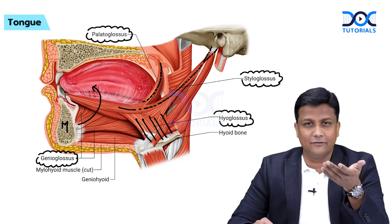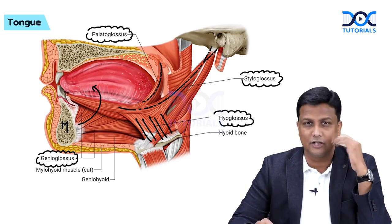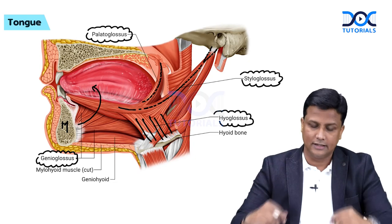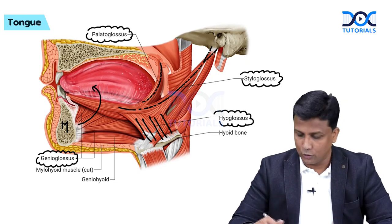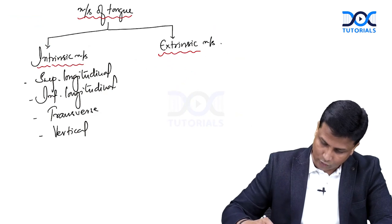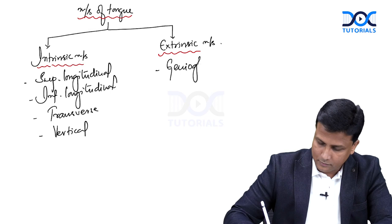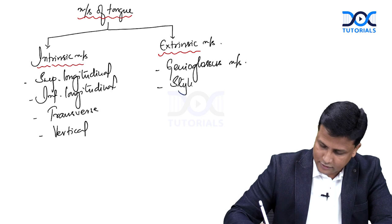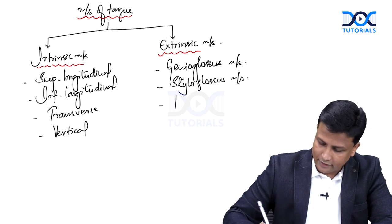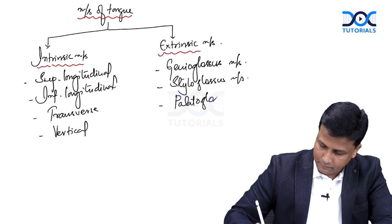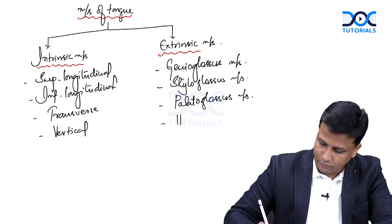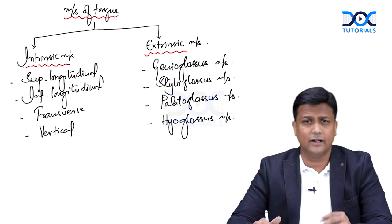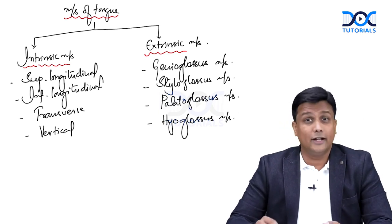So it is easy to remember all four extrinsic muscles of the tongue: one in front, one behind, one above, one below. In front from the mandible is genioglossus; behind from the styloid process is styloglossus; from above the palate is palatoglossus; and from below the hyoid bone is hyoglossus. These are all the muscles of the tongue — extrinsic as well as intrinsic.